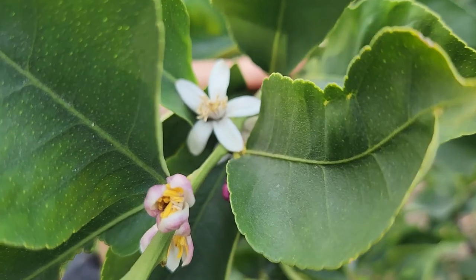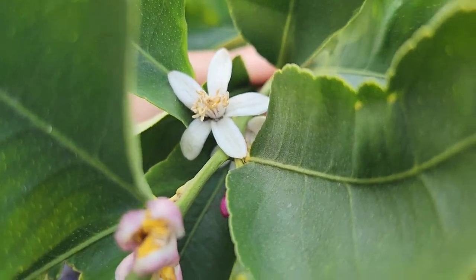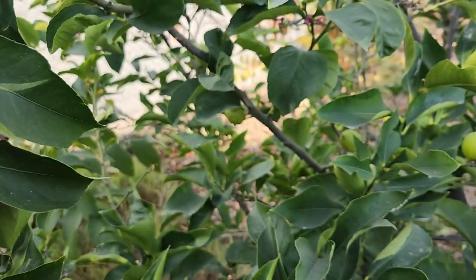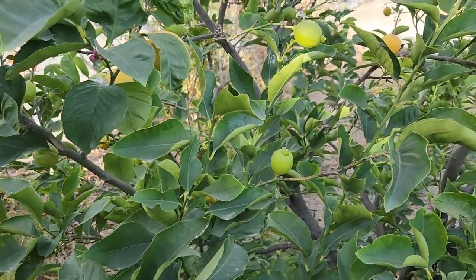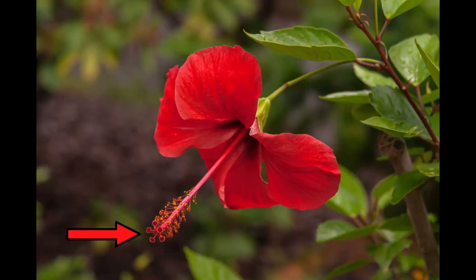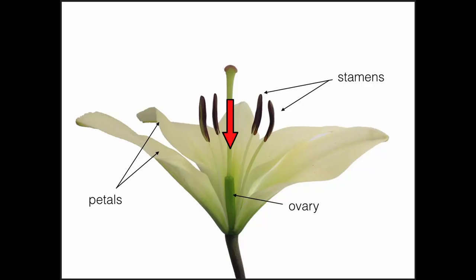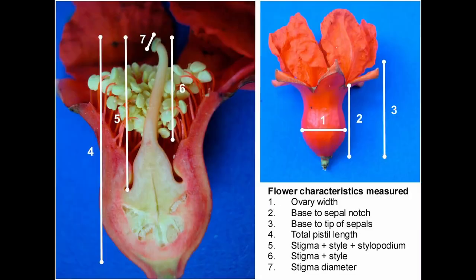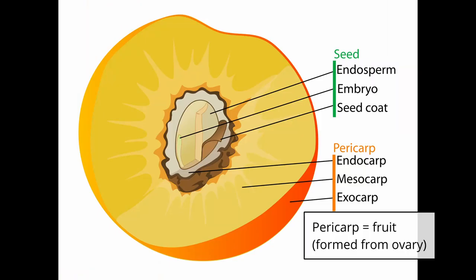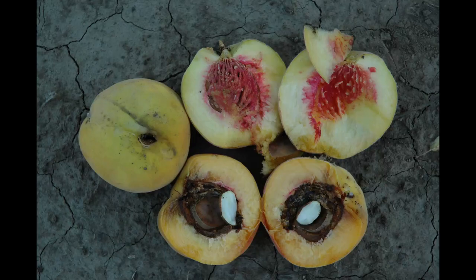That leads us into the next part, which is that the flower develops into a fruit. Pollination occurs when the pollen lands on the stigma, the sticky female part, and it goes down to the ovary where fertilization happens. Seeds form inside this ovary with the genetic material of the male and the female parent. That ovary swells up into what becomes the fruit, and this surrounds the seed.